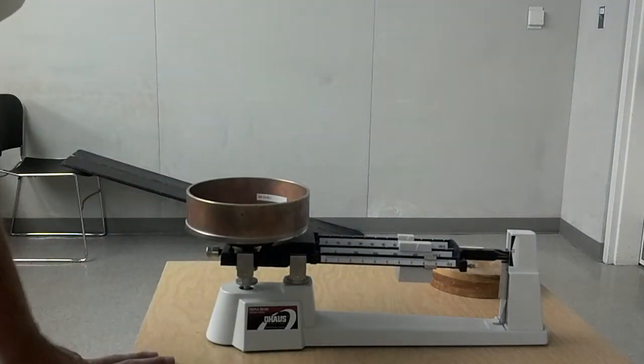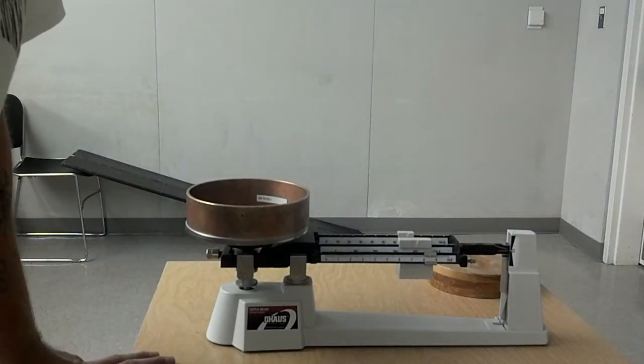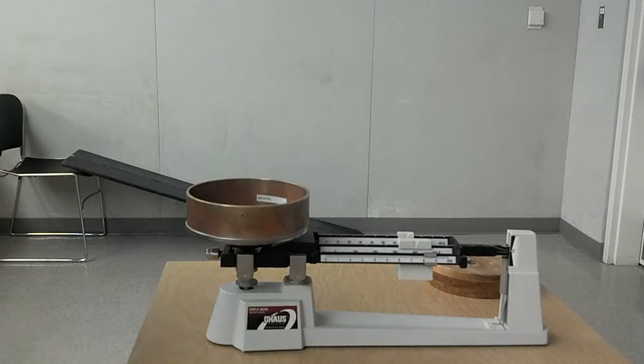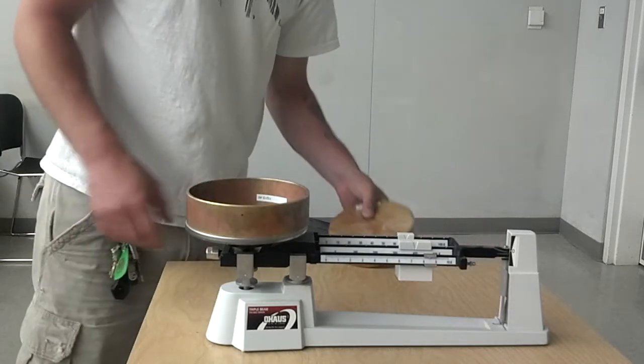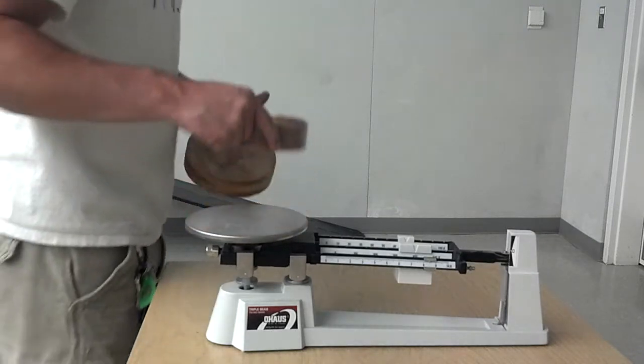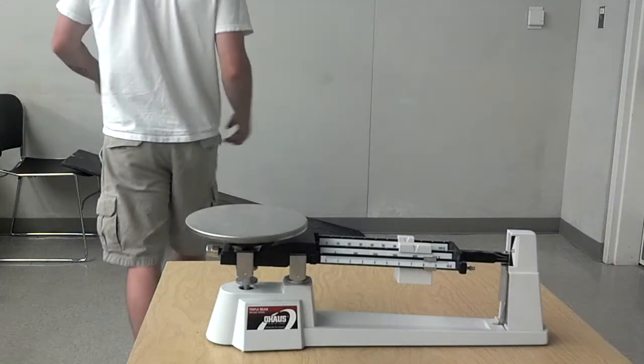And the metal hoop is about 479. So a difference of 6 grams out of 400 and something.